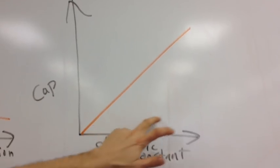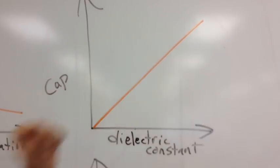Dielectric constant. As that gets larger, the capacitance gets larger. It's a linear relationship.